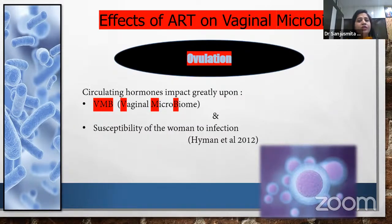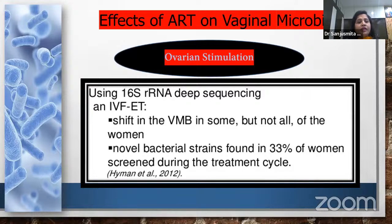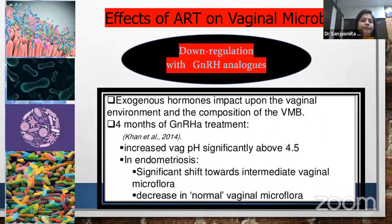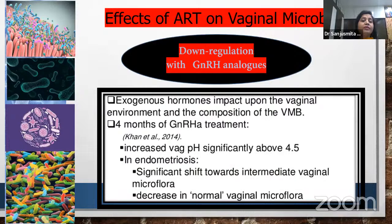During ovulation, circulating hormones also impact greatly upon the vaginal microbiome. Susceptibility to infection increases due to stimulation drugs used in ART. Due to ovarian stimulation, there occurs a shift of vaginal microbiome in some but not all patients. Novel bacterial strains were found in 33% of women during the treatment cycle. GnRH analogues-based downregulation increases vaginal pH above 4.5 and, in endometriosis, shifts microflora towards intermediate species, decreasing normal vaginal microflora and predisposing to more infection.